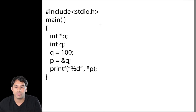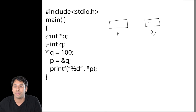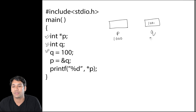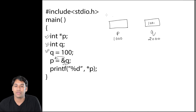Consider this program: we have a pointer p and an integer number q. Let's suppose the address of pointer p is 1000 and the address of integer q is 2000. We store 100 into q, so q is now storing 100. In the next line we do p = &q, meaning we find the address of q and store it into p. So the address of q, which is 2000, is now stored in pointer p.